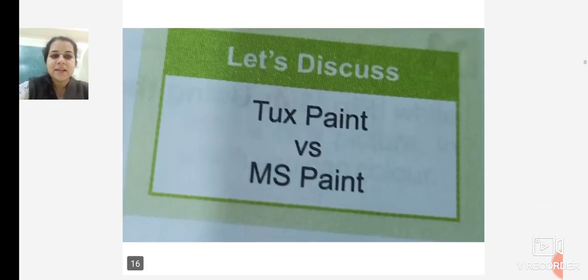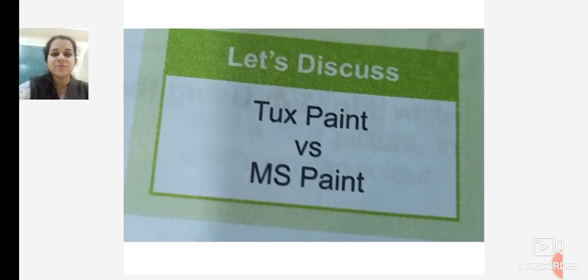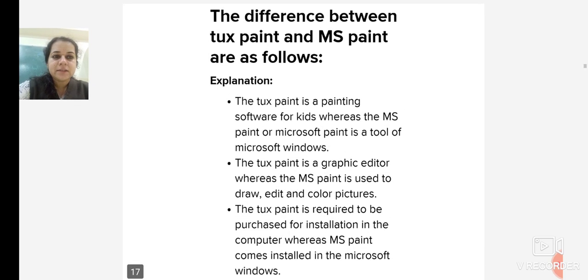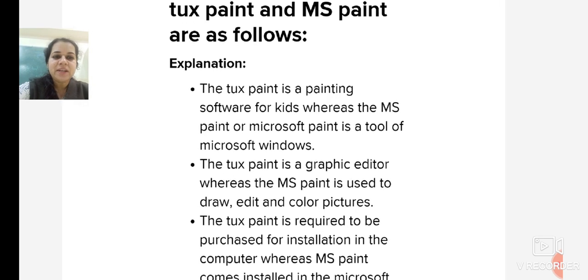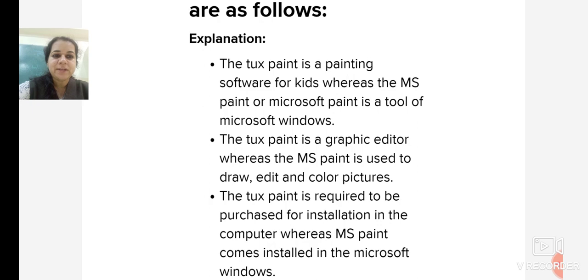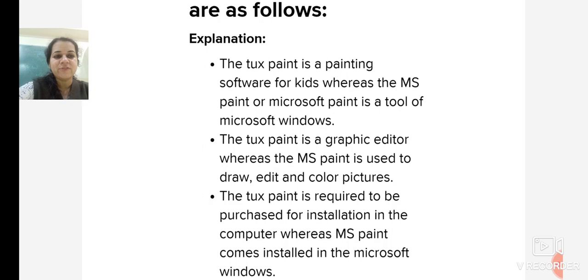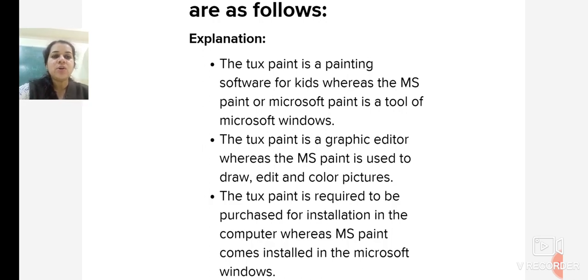Let us discuss Tux Paint versus MS Paint. The differences are as follows: Tux Paint is a painting software for kids, whereas MS Paint (Microsoft Paint) is a tool of Microsoft Windows. Tux Paint is software you have to download, while MS Paint is already present in Microsoft Windows — it comes pre-installed.